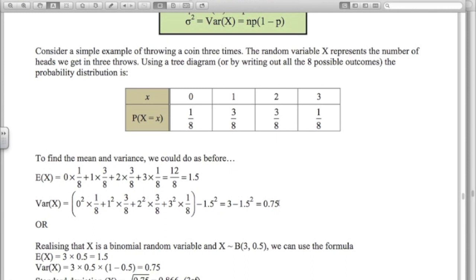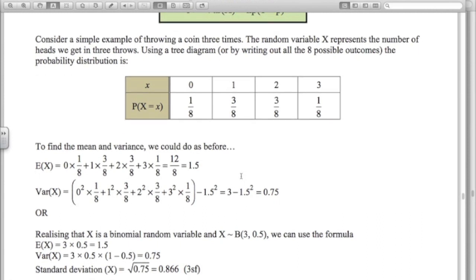The mean is 1.5, the variance is 0.75, or it's just much easier to use the formula. Recognizing that the number of heads that you get is a binomial random variable with three trials and the probability of a success of each trial is a half or 0.5. So the expected value or the mean is n times p: 1.5. The variance: n times p times 1 minus p: 0.75.